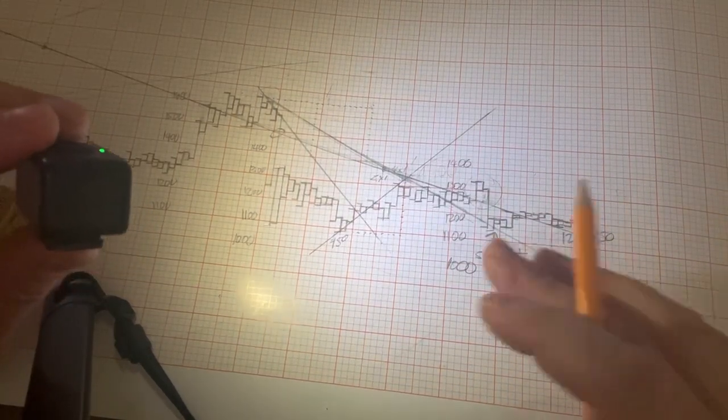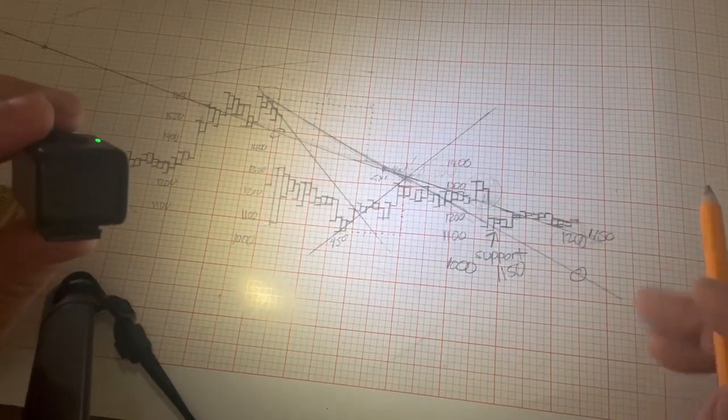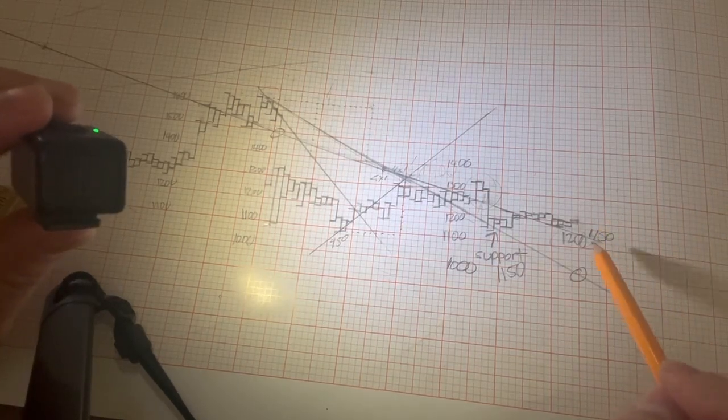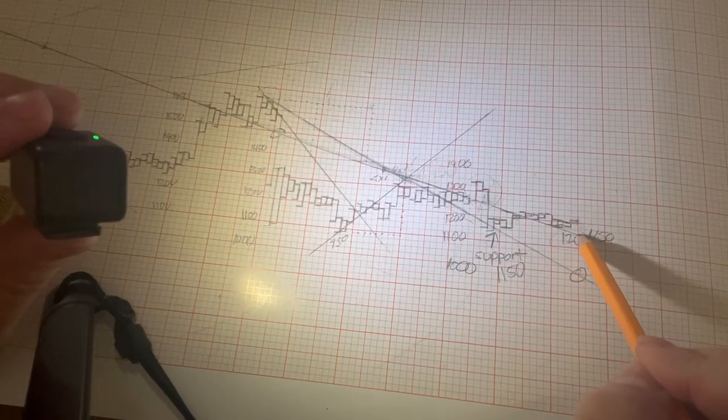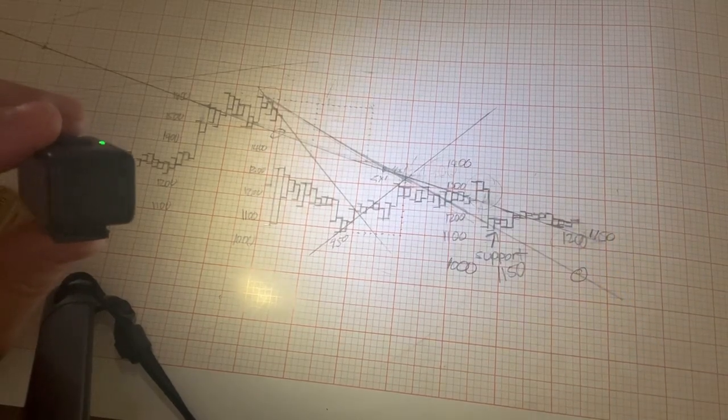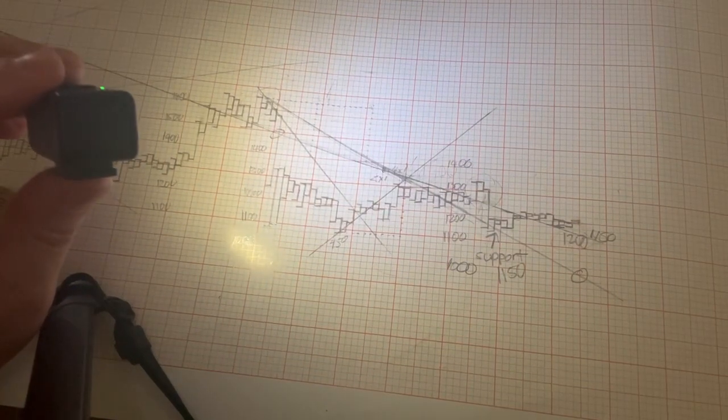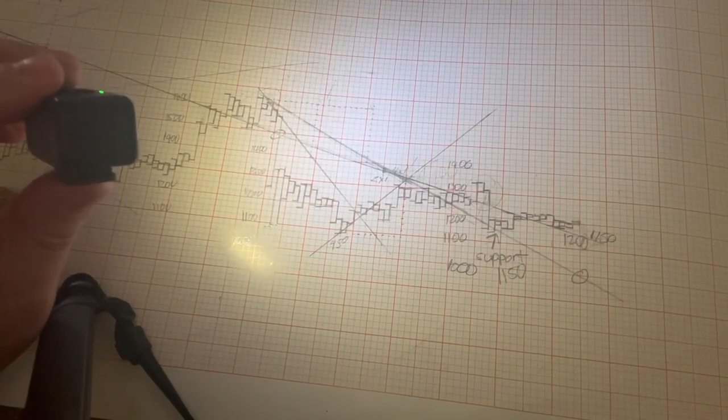And that's kind of obvious, right? A lot of people have talked about a retest of $1,000, and I get it. But what a lot of people are not talking about is the importance of $1,150, and I can show it on a chart that not many people can see. So that's the Ethereum Gann update. Stay tuned for more.